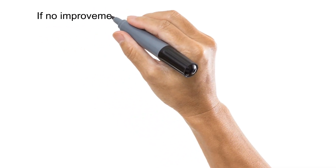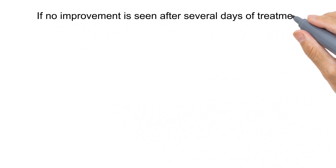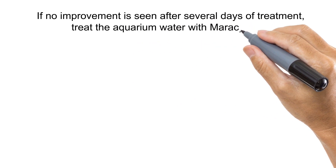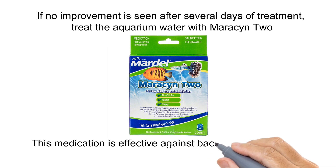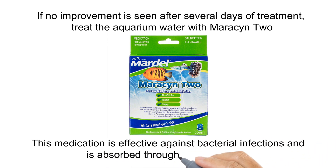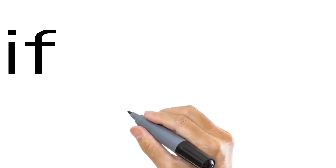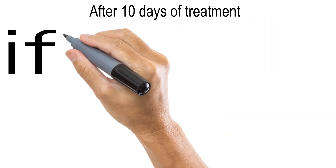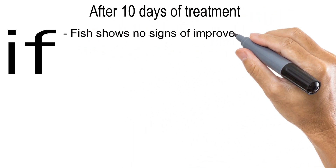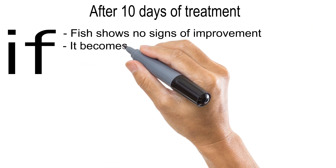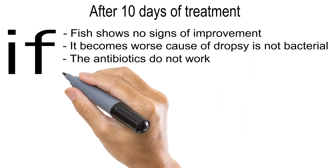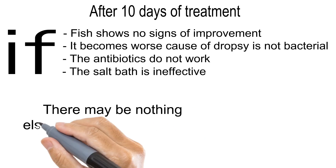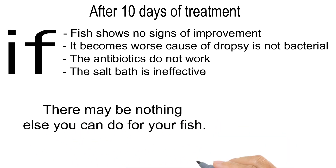If no improvement is seen after several days of treatment, treat the aquarium water with Maracyn 2. This medication is effective against bacterial infections and is absorbed through the skin of fish. If after 10 days of treatment your fish shows no signs of improvement, or if it becomes worse, it may be that the cause of dropsy is not bacterial. If the antibiotics do not work and the salt bath is ineffective, there may be nothing else you can do for your fish.